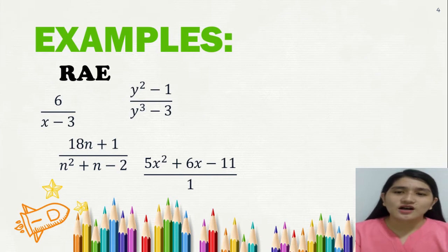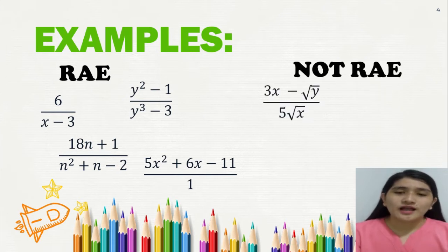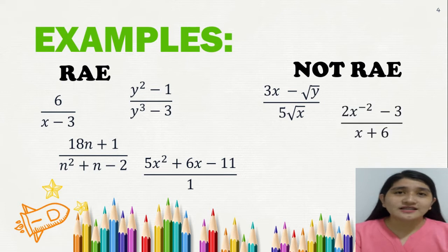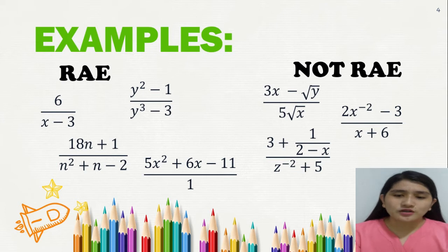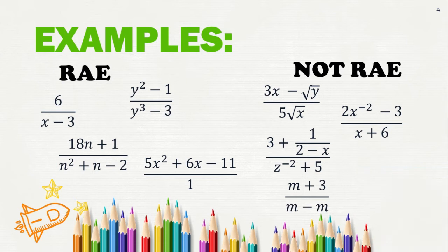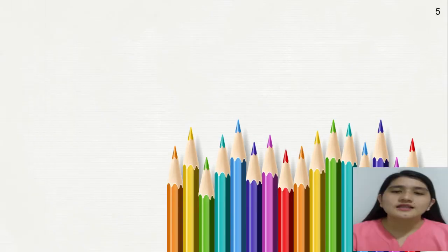On the other side, these are examples that are not RAE. The first example has a square root of y and square root of x, meaning it is not RAE. The second example has negative exponents. The third example is a complex fraction with negative exponents. The last one has m plus 3 over m minus m — this is not RAE because if we simplify the denominator, it becomes zero. The denominator should not be zero.